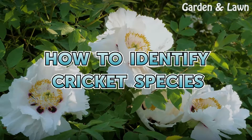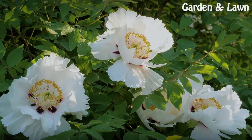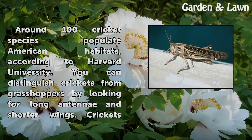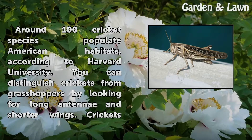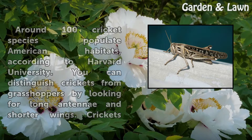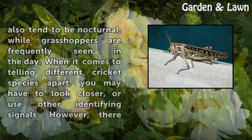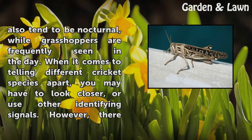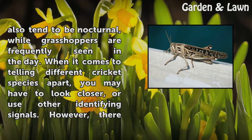How to Identify Cricket Species. Around 100 cricket species populate American habitats, according to Harvard University. You can distinguish crickets from grasshoppers by looking for long antennae and shorter wings. Crickets also tend to be nocturnal, while grasshoppers are frequently seen in the day.